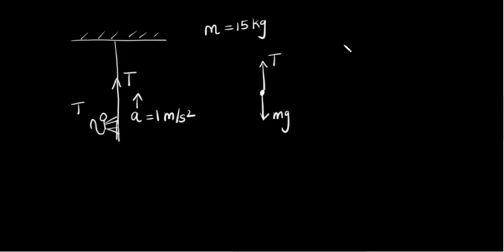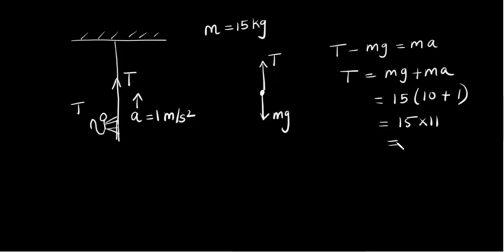Now the acceleration is 1, so T minus mg is equal to ma. So the tension T is equal to mg plus ma. M is 15, so 15 into g is 10 plus 1, which is 11. So this is 15 into 11, which is 165. The tension is 165 Newton.